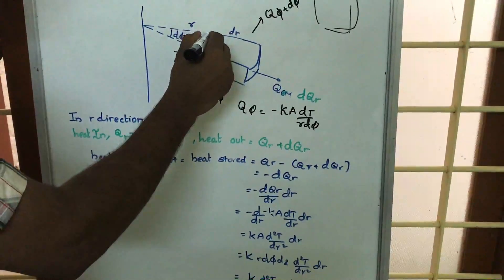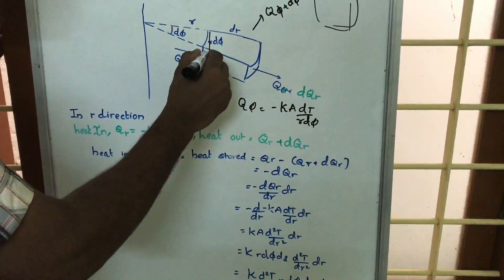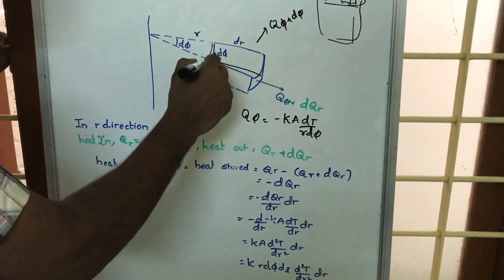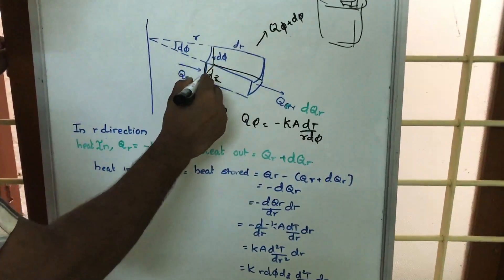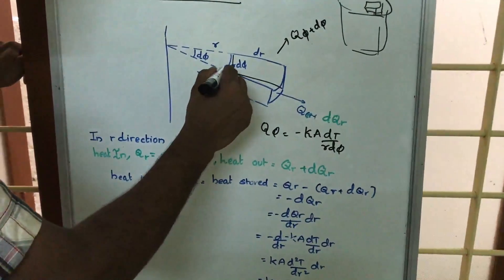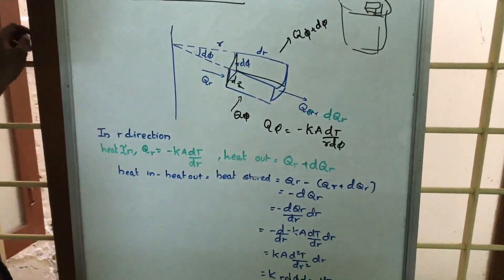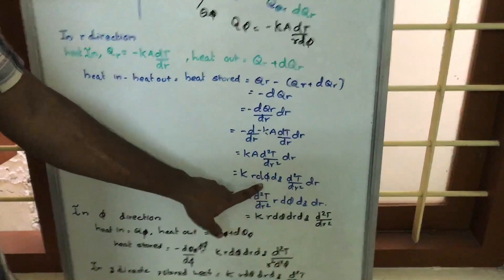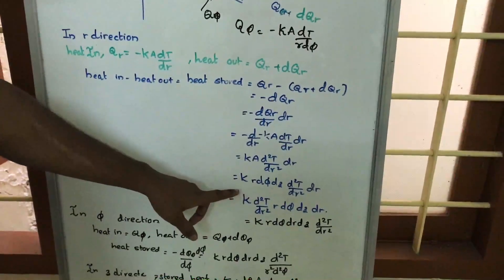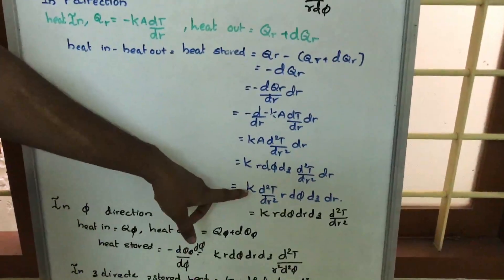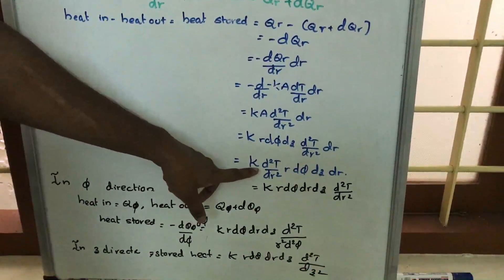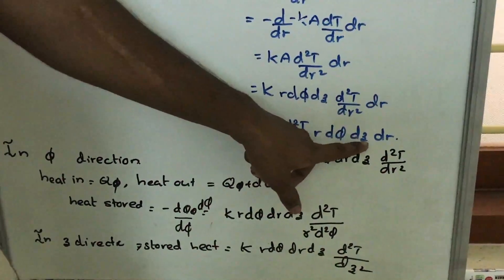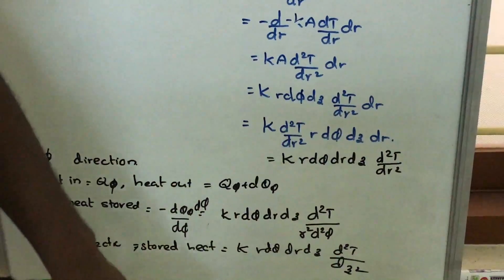The area here is the inlet area of the element — this distance dz into this distance r·dφ, giving area = dz·r·dφ. Rearranging, we get k·d²T/dr²·r·dφ·dz·dr as the energy stored due to heat transfer in the r-direction.